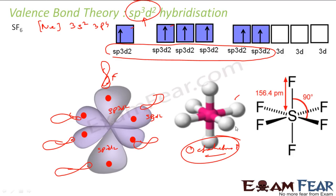Using VSEPR theory we also got the same shape. In the last video I said we could not find the shape of PCl5 using VSEPR — that was wrong; using VSEPR we did find the shape of PCl5. But for PCl5 and SF6, Lewis theory failed there, because Lewis theory applies only to second period elements.